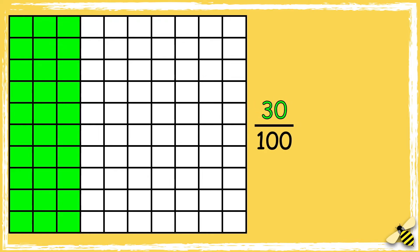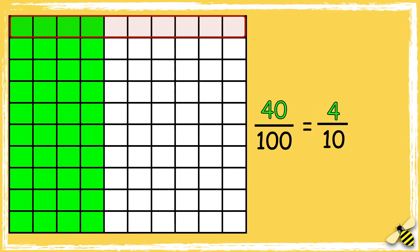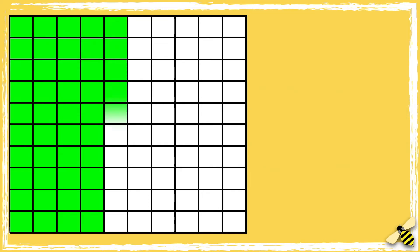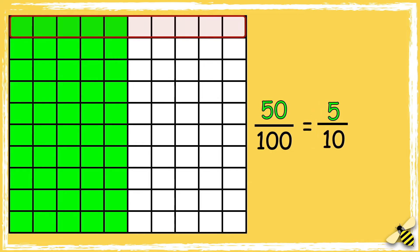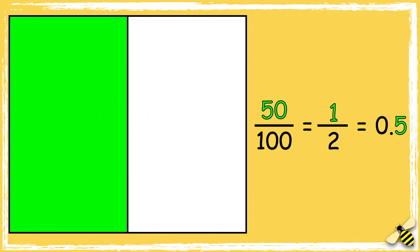Thirty hundredths is equal to three tenths, which is zero point three. Forty hundredths is equal to four tenths, which is zero point four. Fifty hundredths is equal to five tenths, which is zero point five. This is also an equivalent fraction to one half.